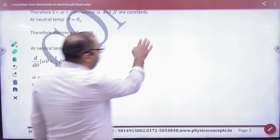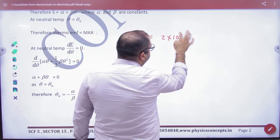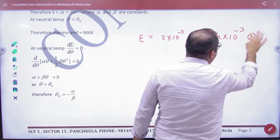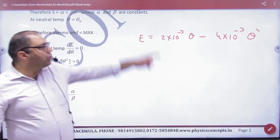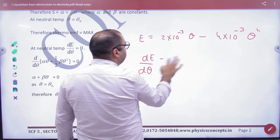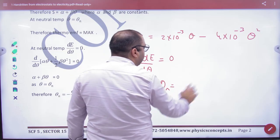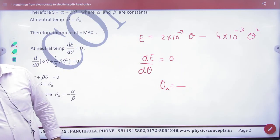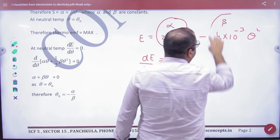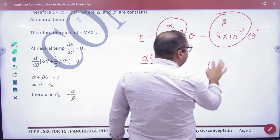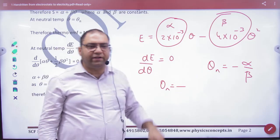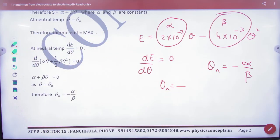In the question, EMF value is given as 2 times 10^-3 theta minus 4 times 10^-3 theta square. He will ask neutral temperature. So there are two methods - either you differentiate EMF and put equal to 0, what will happen? Automatically neutral. If you don't want to do this, then think - what is alpha term, what is beta term? Remember neutral temperature formula: minus alpha divided by beta.